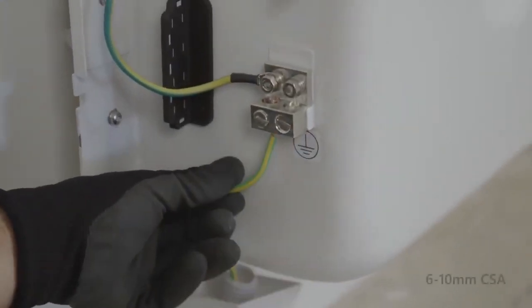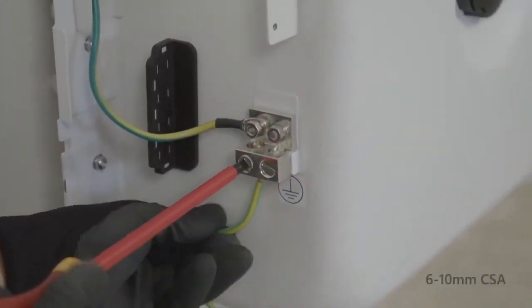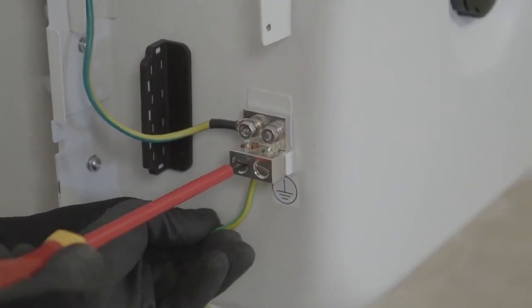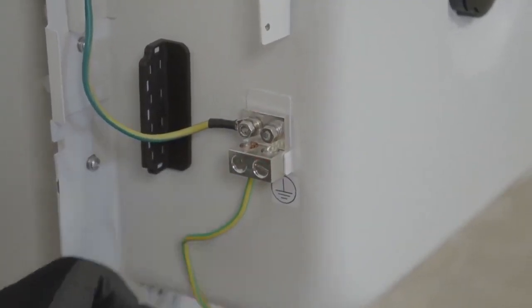Simply wire the earth to the earth terminal bar using either 6 to 10 mm CSA cable. You'll notice that the earth terminal has two fixings, that's for if two batteries are being paralleled together.